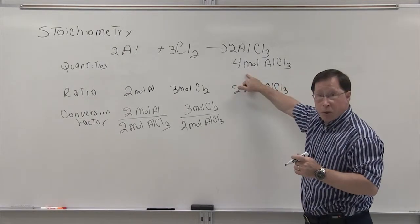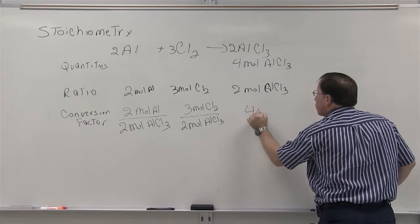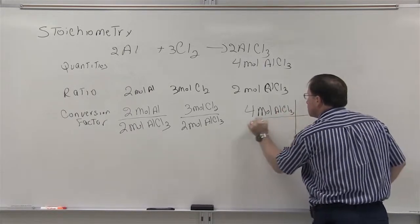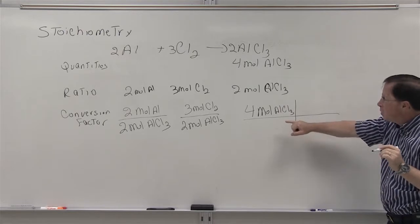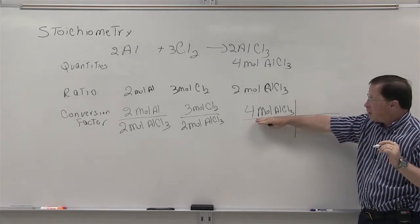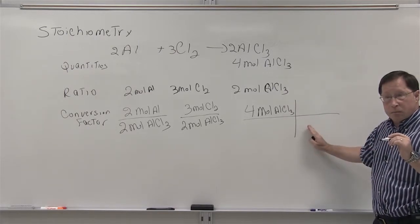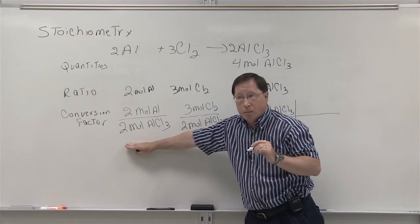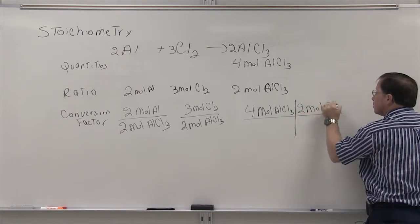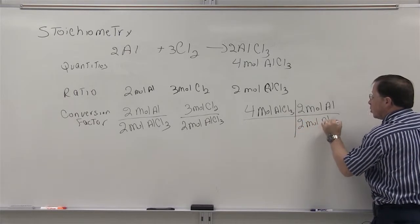Our goal is to produce four moles of aluminum chloride. So let's say that we wanted four moles of aluminum chloride. To determine how much aluminum is needed, we can use what is called a T-chart. We take the quantity of aluminum chloride that we want, we multiply it by the ratio of the reactant that we are working with. In this case, we have two moles of aluminum over two moles of aluminum chloride.